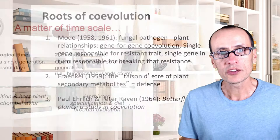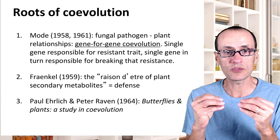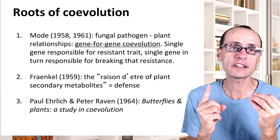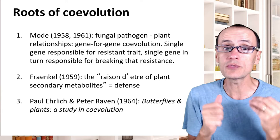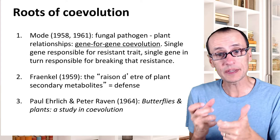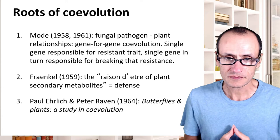The roots of the study of co-evolution really started in about the middle of the last century. Some of the best examples that emerged at the time involved what's often referred to as a gene-for-gene interaction between plants and fungal pathogens. A plant had a single trait governed by a single gene that resulted in resistance to a particular fungal pathogen.